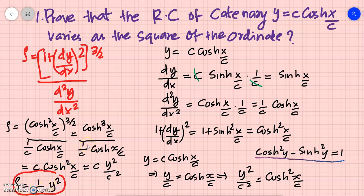So we have established that the radius of curvature equals (1/c)·y², meaning the radius of curvature varies as the square of the ordinate y. I hope you understood. Thank you.